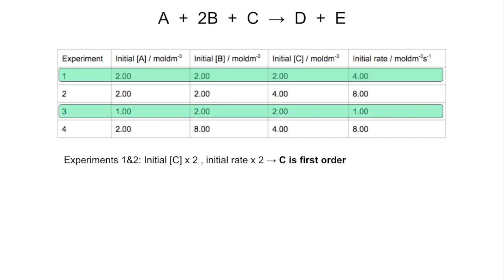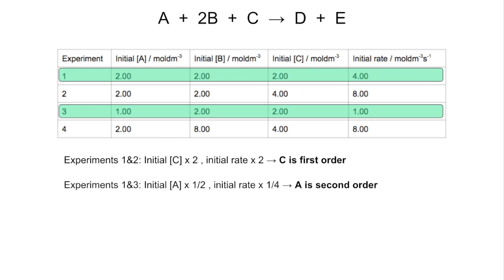The next pair is experiments 1 and 3. A is now the one changing — B and C are held constant at 2 moles per decimetre cubed. You can see that the concentration of A halves and the initial rate goes down by a factor of 4, so it's quartering — that's second order.